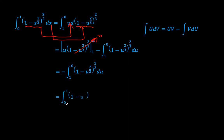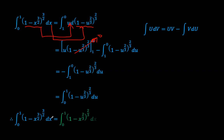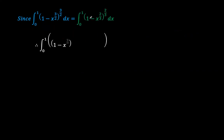So now we have the integral from u equals 0 to 1 of 1 minus u to the power 2 over 3, to the power 2 over 3. Renaming u back to x, we see that the integral from x equals 0 to 1 of 1 minus x to the power 3 over 2, to the power 3 over 2 is equal to the integral from x equals 0 to 1 of 1 minus x to the power 2 over 3, to the power 2 over 3. Since there is this equality, subtracting one integral from the other means the final answer collapses to 0, which is very cool.